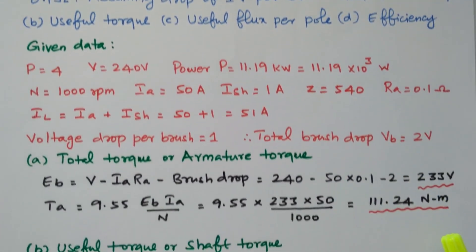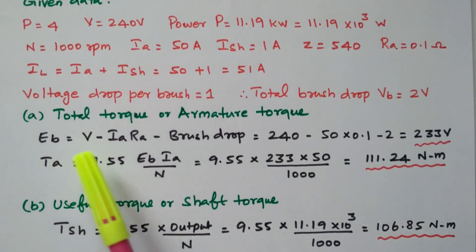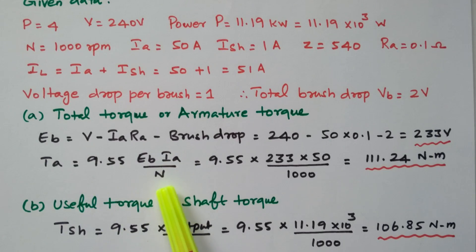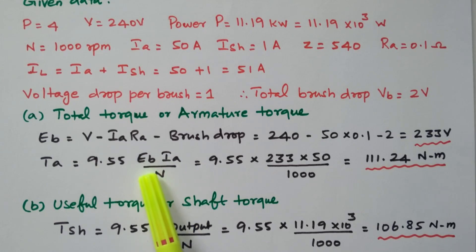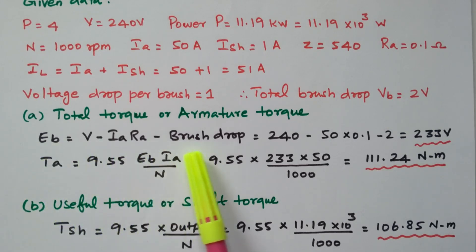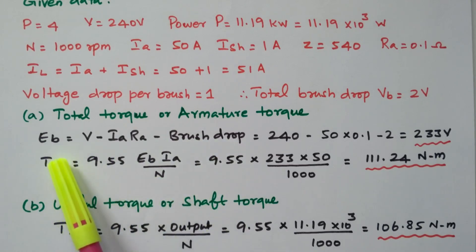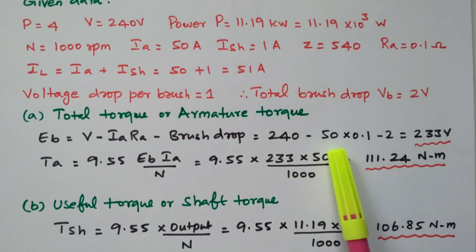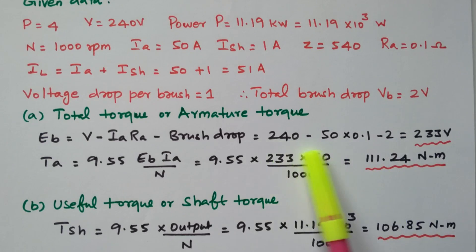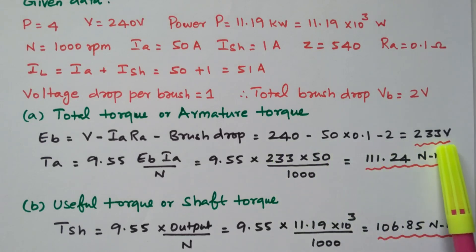Now we find the total torque, also called armature torque — the torque developed in the armature. The formula is TA = 9.55 × EB × IA / N. IA and N are known, but EB must be found first. Back EMF: EB = V − IA·RA − brush drop = 240 − (50 × 0.1) − 2 = 233 V.